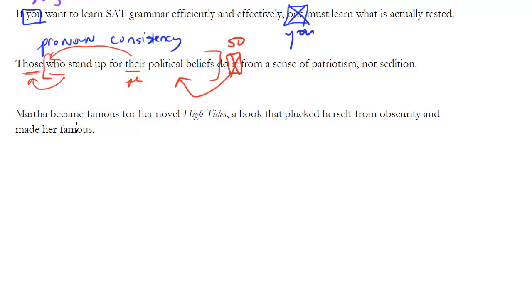Final sentence: Martha became famous for her novel High Tides, a book that plucked herself from obscurity and made her famous. Be careful. 'Became famous for her novel'—referring back to Martha, no problem. But 'a book that plucked herself'—wait a minute. 'Herself' is a reflexive pronoun; you use it when someone is doing something to themselves. Here though, it's the book that did something. It's the book that plucked herself. We can't use 'herself' here; we've got to use just the object 'her.' A book that plucked her from obscurity and made her famous. Notice we didn't say 'made herself famous' there. This is an example of where the reflexive pronoun is used incorrectly.